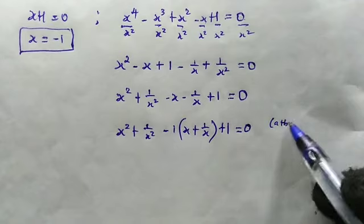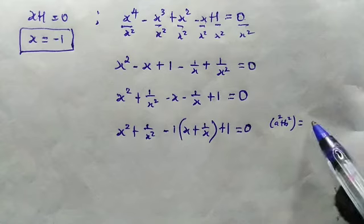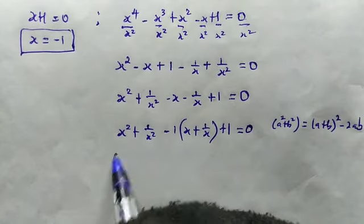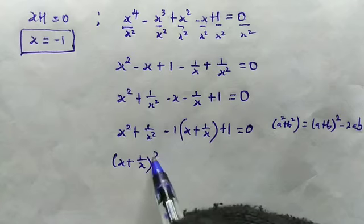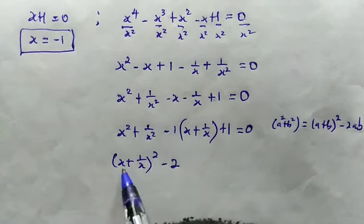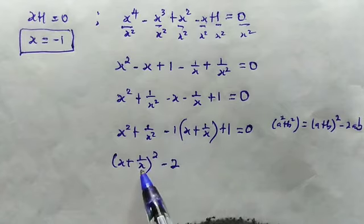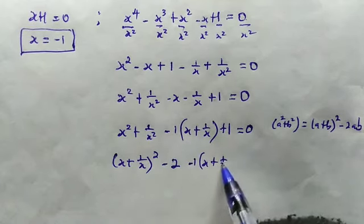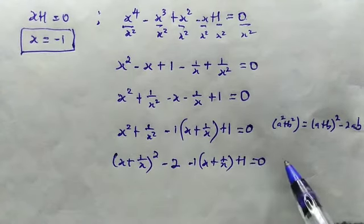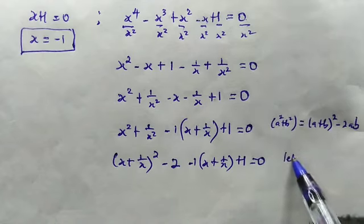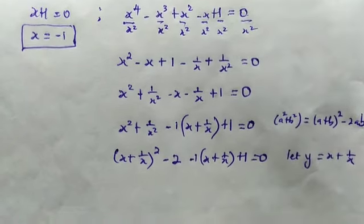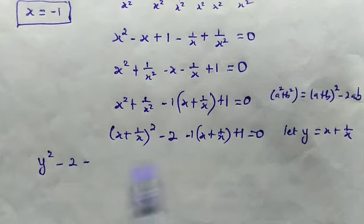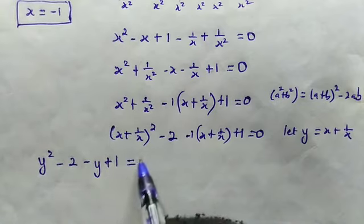Using the property that a² + b² = (a + b)² − 2ab, we have x squared plus 1 over x squared equal to (x + 1/x)² − 2. So the equation becomes (x + 1/x)² − 2 minus 1 times (x + 1/x) plus 1 equals 0. We make the substitution y = x + 1/x.